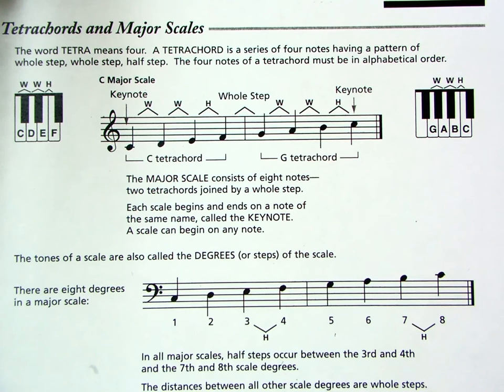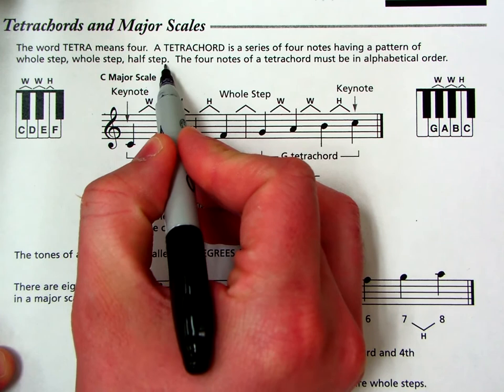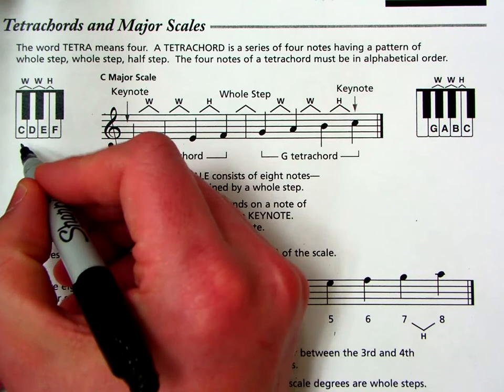So tetrachords and major scales. Let's just go through some of the specifics here and then we'll start building some together. First off, tetra, that root word means four, so it's going to consist of at least four different notes whenever we're building it. The pattern for building a tetrachord is whole step, whole step, half step. So whole, whole, half.